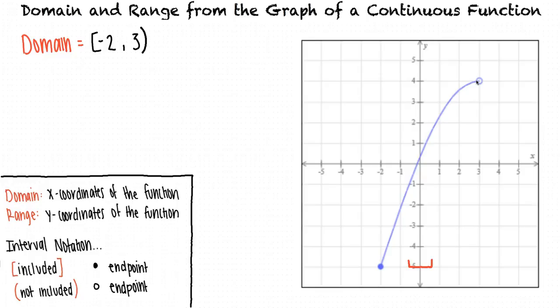Between the y-coordinates negative 5 and 4, there are no holes or breaks in the function, which means the range includes all values greater than or equal to negative 5 and less than 4. We write this in interval notation as [−5, 4).